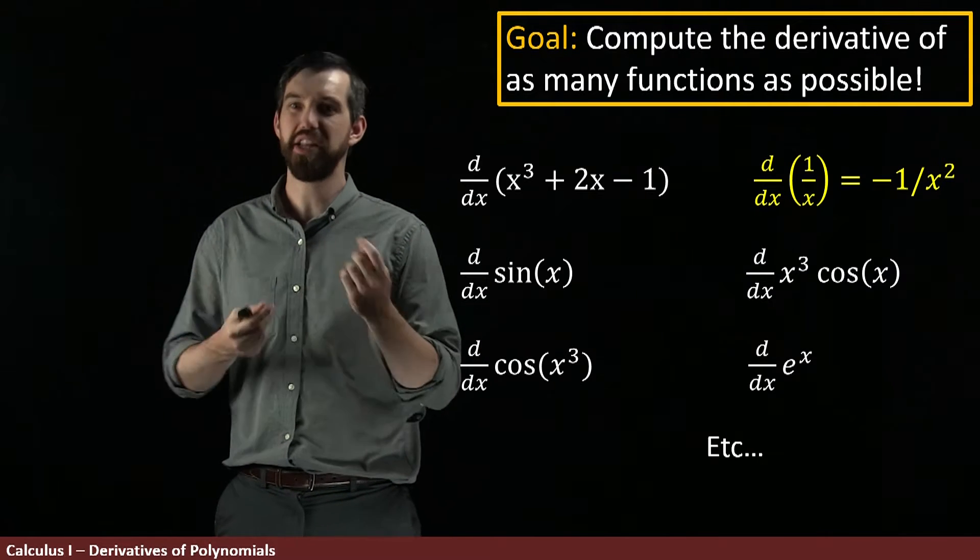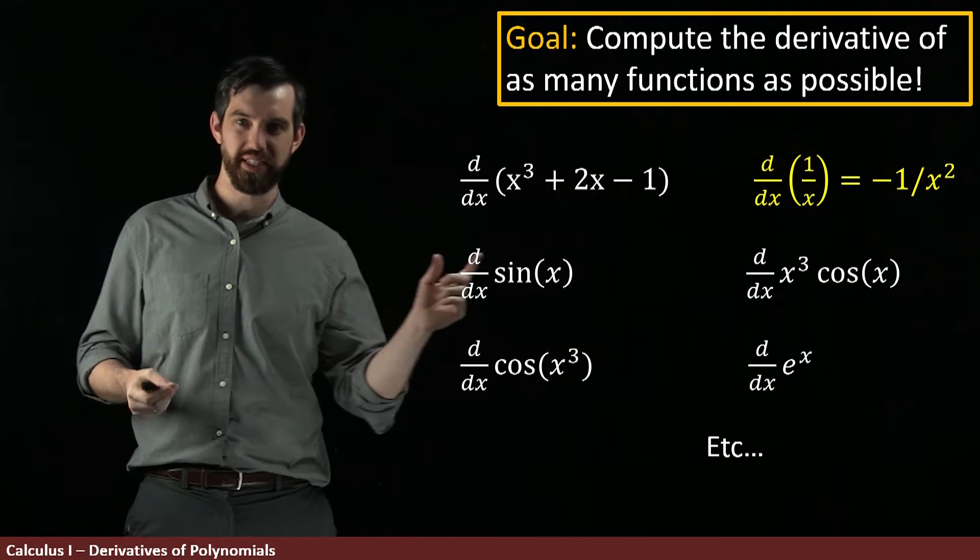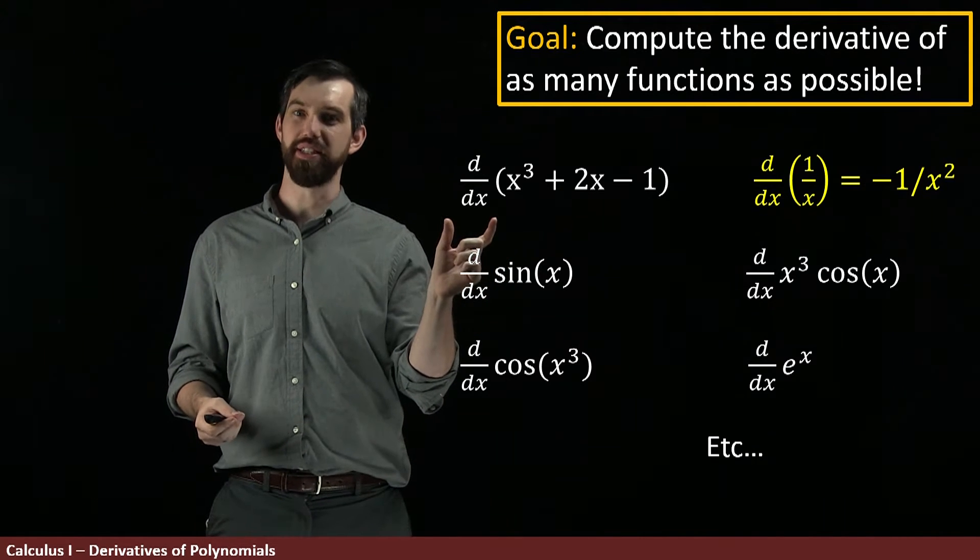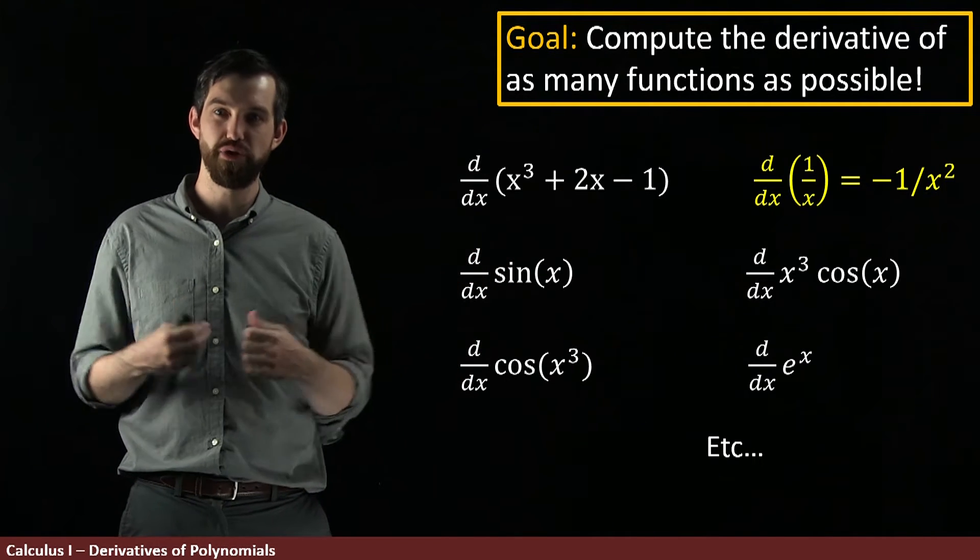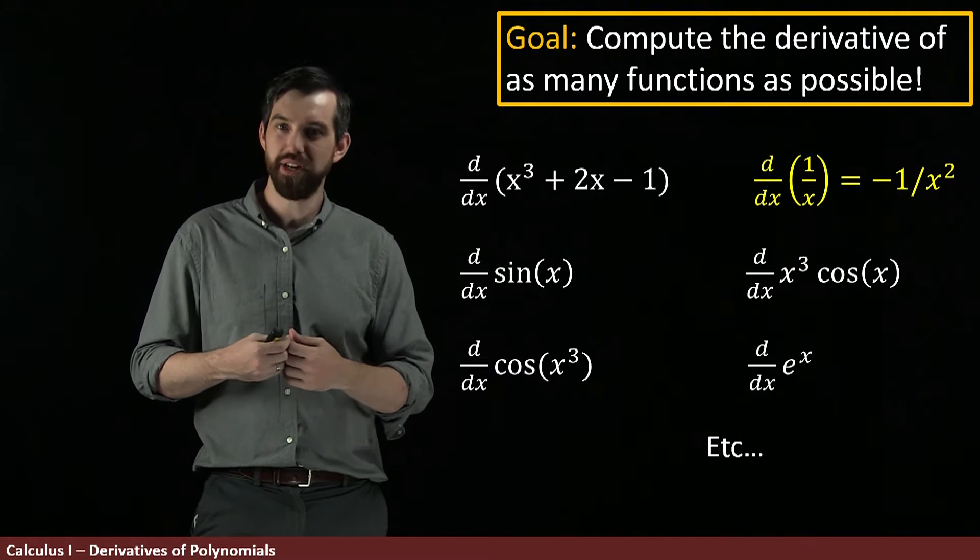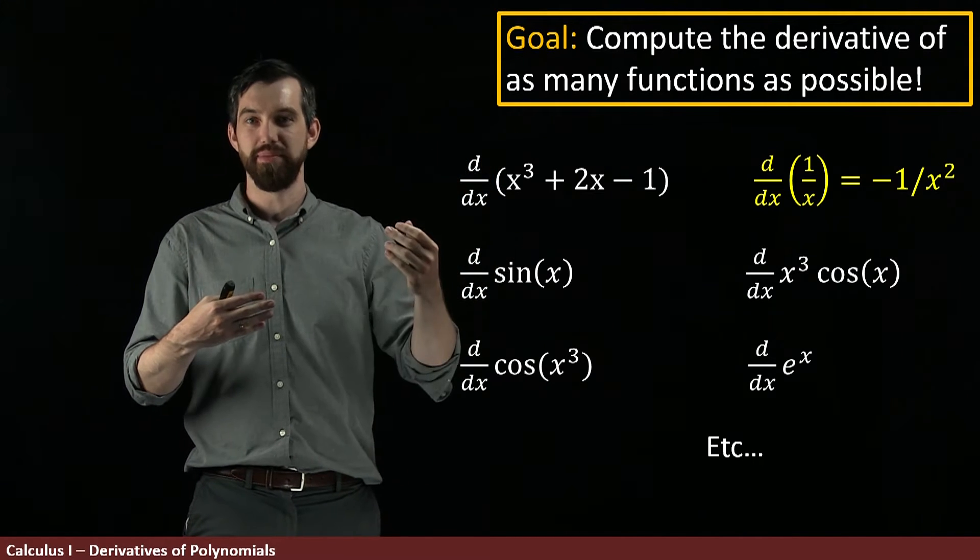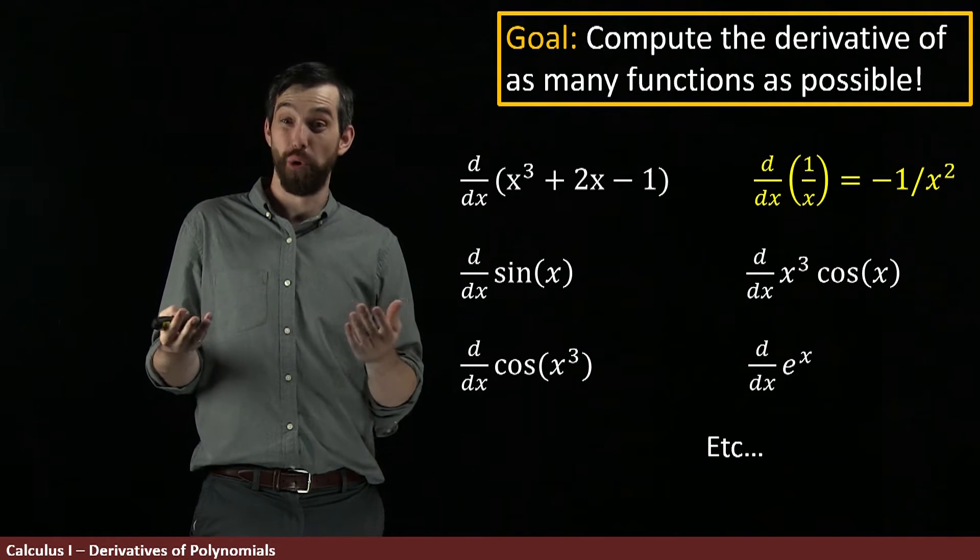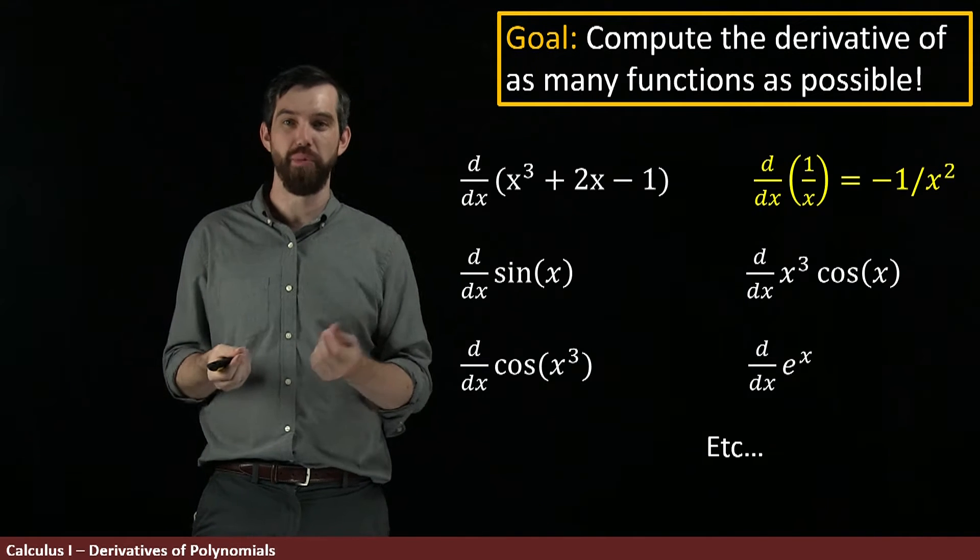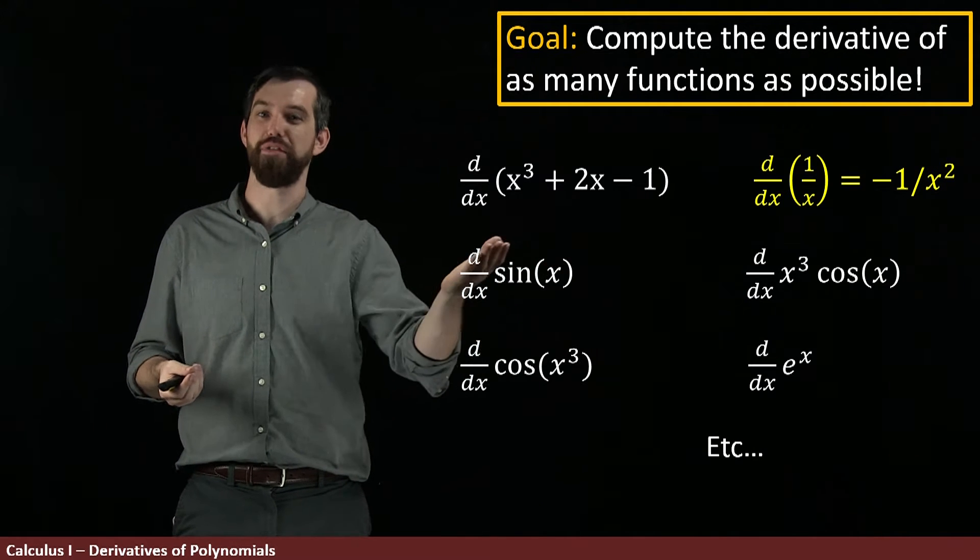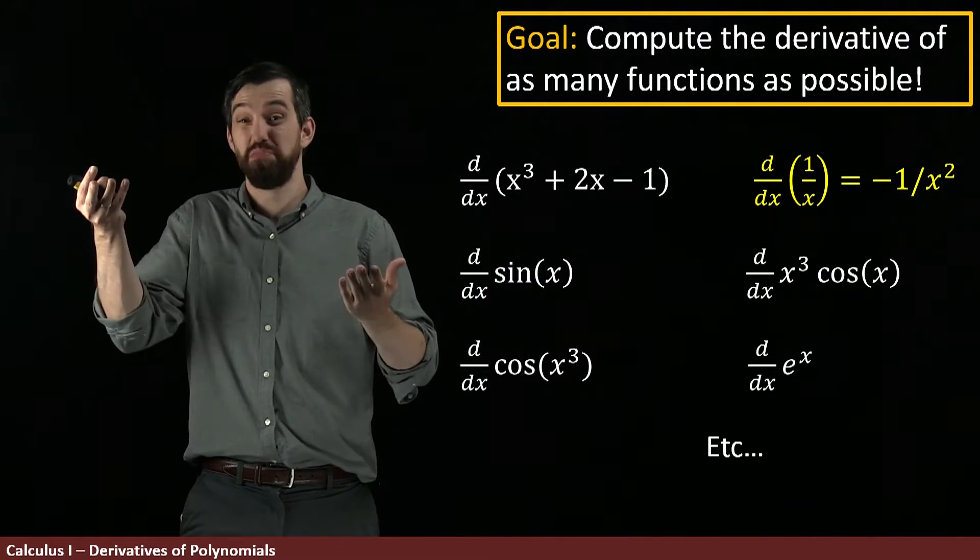By the way, I'll note that in these videos I'm going to alternate between the d/dx notation, this Leibniz notation for taking the derivative, and the notation due to Lagrange, which is f prime. When I have a generic placeholder like f, I'll often use f'. When I've got an explicit function, I'll often use d/dx, but either way, it's just taking the derivative.